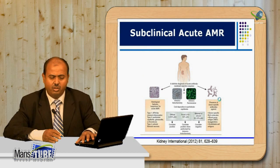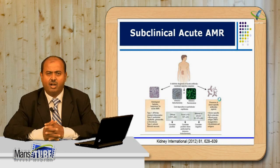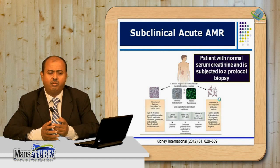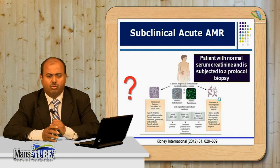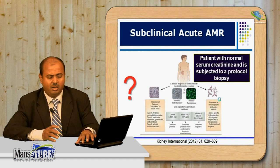Another scenario: with protocol biopsy in a patient with normal graft function and no rising creatinine, you may still find all histological details of acute AMR and DSA in the serum. This is subclinical acute antibody-mediated rejection. We should monitor these patients seriously — how to treat is still debated.